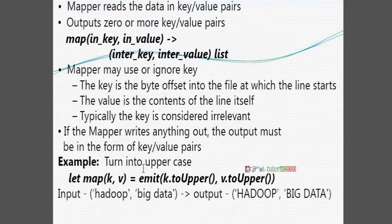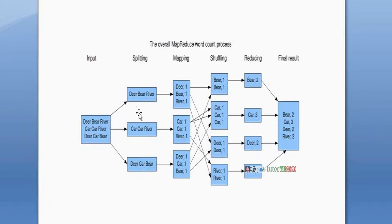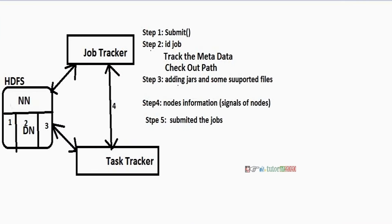What do you mean by mapper and what do you mean by reducer? Mapper means it reads the data from the data node as a key-value pair. In the diagram, data is reading from the data node as a key-value pair using the splitting concept. Once the task tracker submits the job, immediately the mapper's work starts.